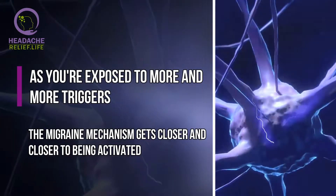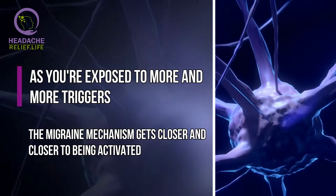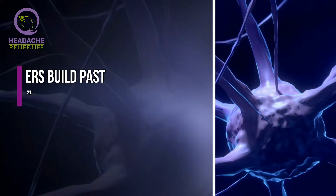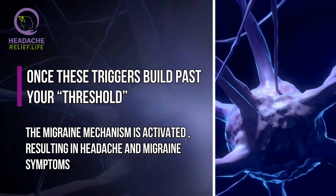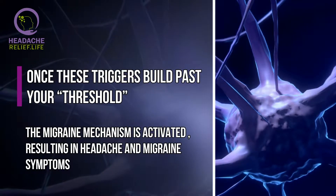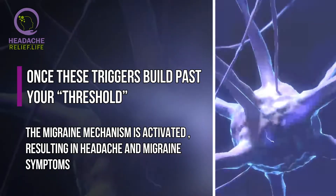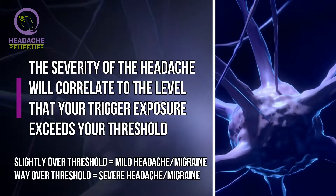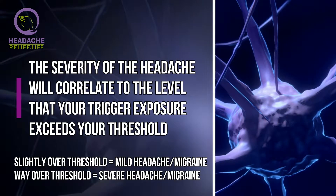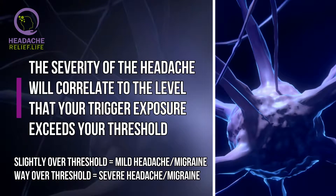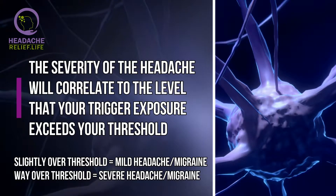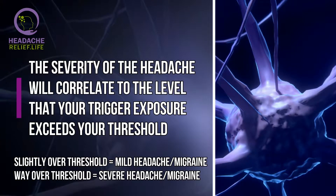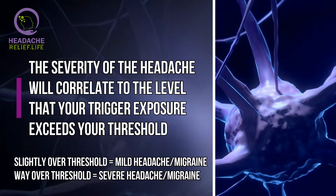As your exposure to triggers increases, the migraine mechanism gets closer and closer to being activated. Once these triggers build past your threshold, the migraine mechanism is activated, resulting in headache and migraine symptoms. The severity of your headache will correlate to the level that your trigger exposure exceeds your threshold — slightly over means mild symptoms, while going way over results in much more severe symptoms.